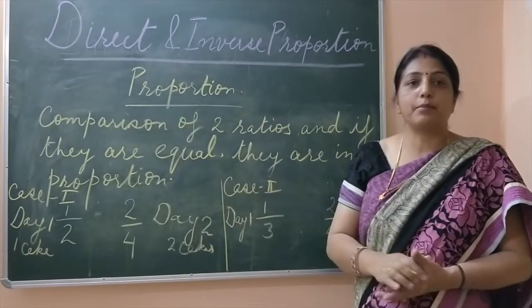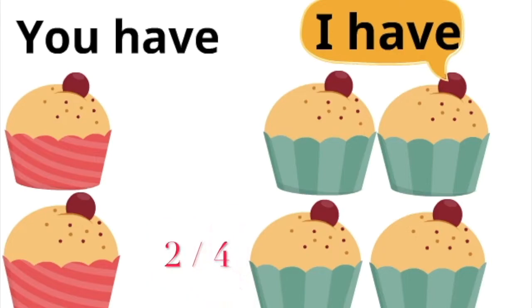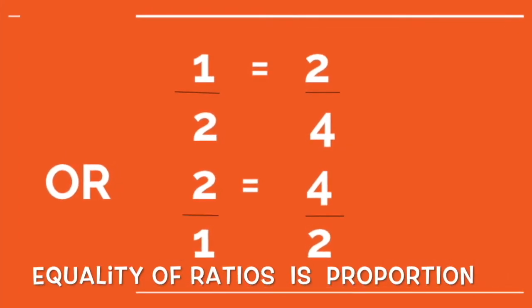We take an example of a cake. Suppose one day mother gives you one cake and she gives me two cakes. I get double than you or you are getting half than me. Next day she gives you two cakes and me four cakes. Again I get double than you. Then we say that both the ratios 1 by 2 and 2 by 4 are in proportion.